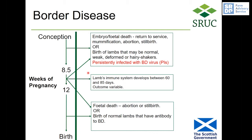If the virus infects the unborn lamb after its immune system has developed, it produces antibodies and gets rid of the virus, but the damage can still be enough to cause abortion or stillbirth. You may also get the birth of weak lambs or normal lambs. If infection occurs while the lamb's immune system is developing, either option can occur, so you can get a whole range of outcomes.